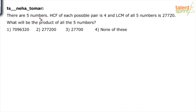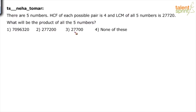There are five numbers. The HCF of each possible pair is 4, and the LCM of all five numbers is 27,720. What will be the product of all five numbers? Options given are 70,96,320; 2,77,200; 27,700; or none of these.